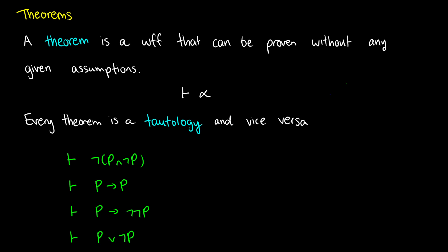This is the last new thing we're going to learn about natural deductive proofs: a theorem. A theorem is any well-formed formula that can be proven without any given assumptions. We can write this as ⊢ α — with the empty set on the left, meaning there are no assumptions whatsoever and we can derive α. A nice thing to know is that every theorem is a tautology, and vice versa — these are just facts that are always true.